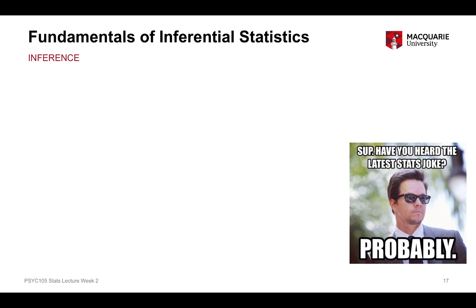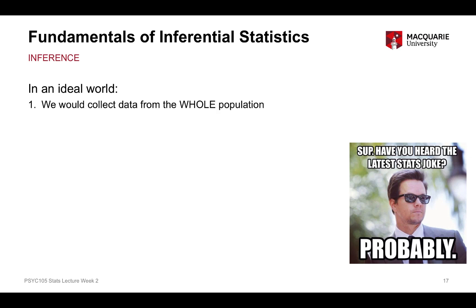The next thing I want to talk about is to set you up for inferential statistics — this idea of collecting information from a sample but making a generalisation back to a wider population. In an ideal world, once we had a research hypothesis, because the research question is about the whole population, we would collect data from that entire population, asking everybody questions to measure things about all those people. But we really can't do that — it's simply not feasible most of the time.